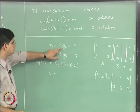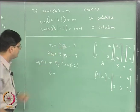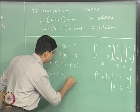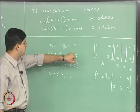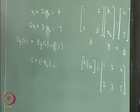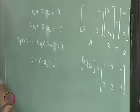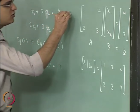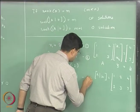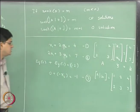So 2x1 minus 2x1 will give us 0, 3x2 minus 4x2 will give us negative x2, and 7 minus 8 gives negative 1. So this will be our new equation. This was our equation 1, this was our equation 2, this we call as equation 3.